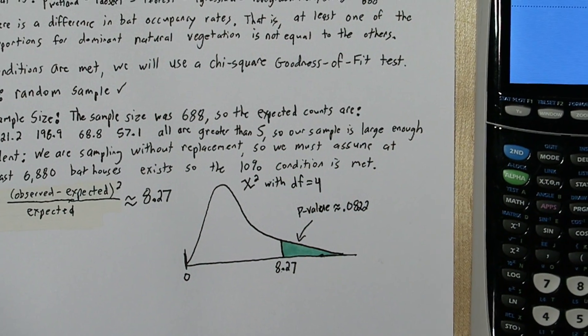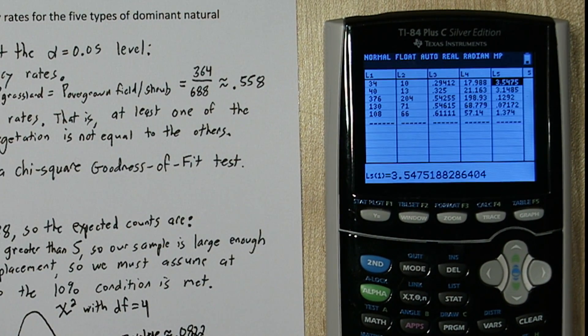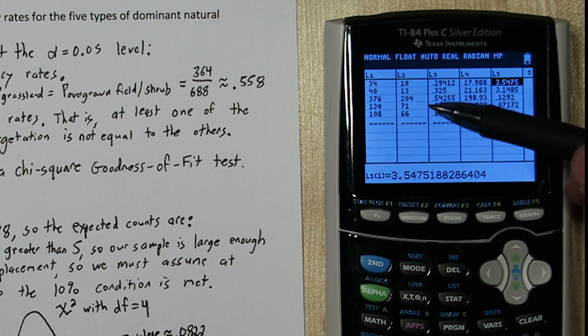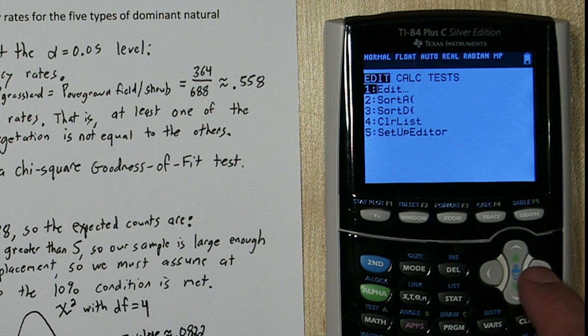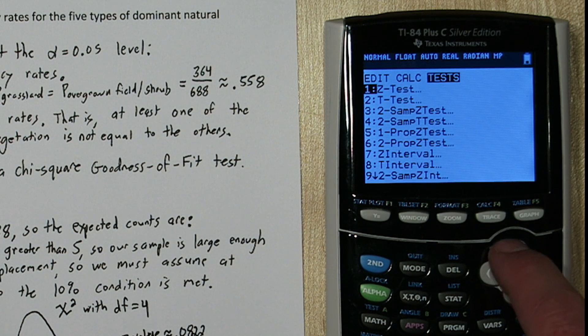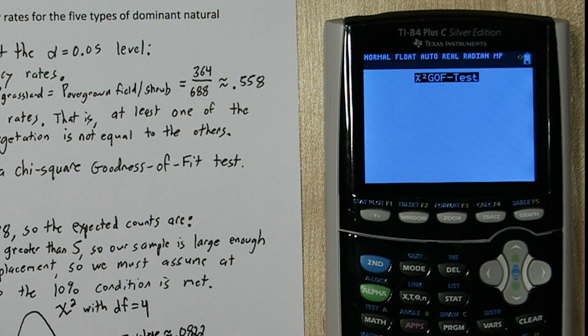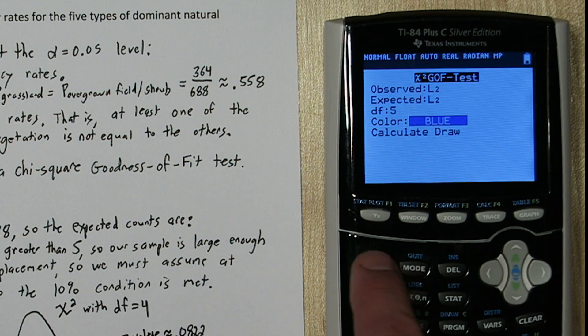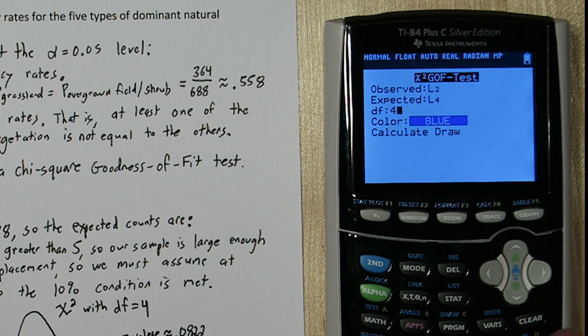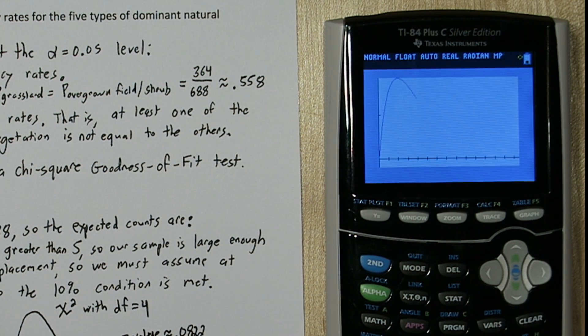Now before we go to the conclude step, let me show you a quicker way to do this. If you press the stat button, remember we have our observed count stored in list two and our expected count stored in list four. Press stat, go over to test, option D on this calculator is the chi-square goodness of fit test. I'm going to tell it list two for observed counts and list four for expected counts. For degrees of freedom, I'll put four. I'm going to highlight draw and press enter.